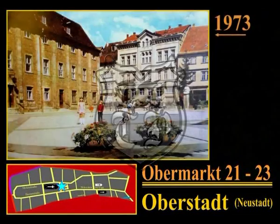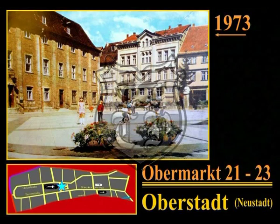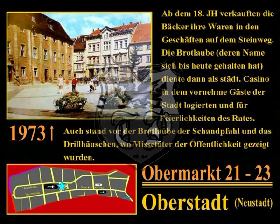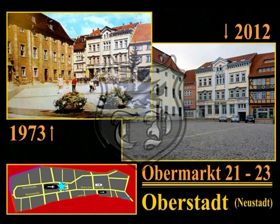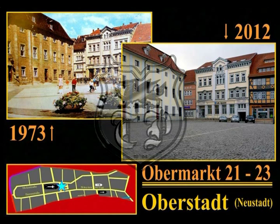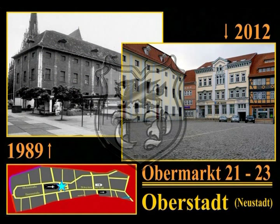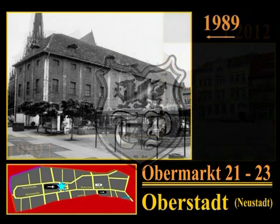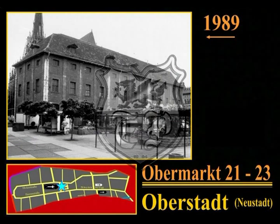Ein Bild aus dem Jahre 1973 zeigt den Obermarkt und die Brotlaube. Bei den Stadtbränden Mitte des 17. Jahrhunderts wurde das ursprüngliche Gebäude zerstört; es diente damals als Tuchlaube und war Sitz des Schultheis. Von 1713 bis 1723 in der heutigen Form neu aufgebaut, war es dann Sitz der Mühlhäuser Bäckerzunft. Ab dem 18. Jahrhundert verkauften die Bäcker ihre Waren auf dem Steinweg. Die Brotlaube diente dann als städtisches Casino, in dem vornehme Gäste logierten und für Feierlichkeiten des Rates. Auf dem Obermarkt vor der Brotlaube stand der Schandfall und das Trillhäuschen, wo Missetäter der Öffentlichkeit gezeigt wurden. Heute findet man in der Brotlaube Teile der Stadtverwaltung und das Ordnungsamt.